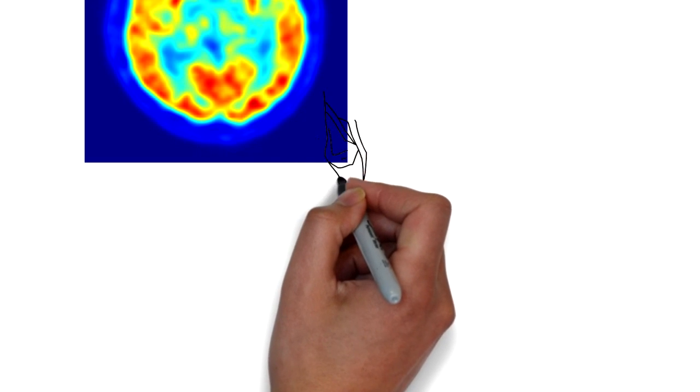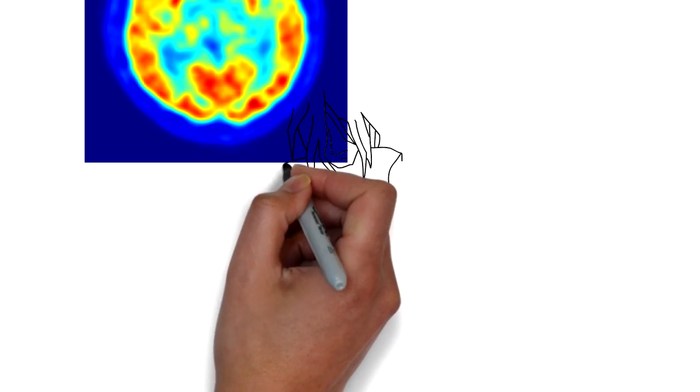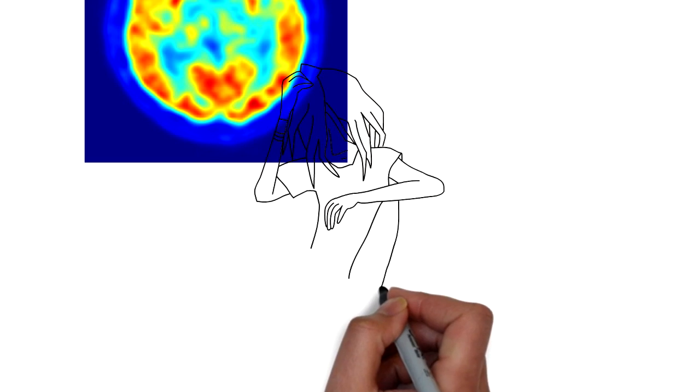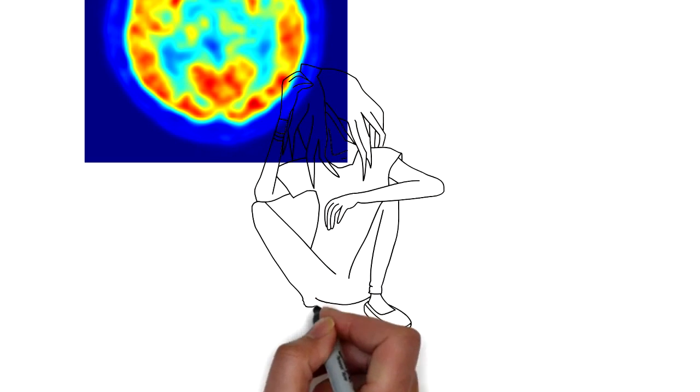However, Raine does suggest that if the damage that causes these brain deficits can be prevented, people might be prevented from becoming murderers as they will not develop a murderous disposition.